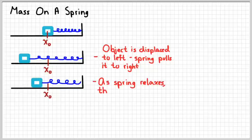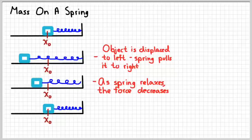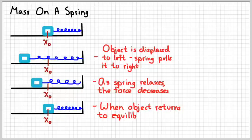Now, as the spring relaxes, it's not as stretched as much, then the force on it decreases. When the object gets back to equilibrium, then that force is going to go away. When the object's at equilibrium, the spring doesn't exert any force. So the force on it is 0.